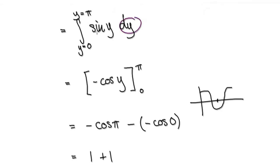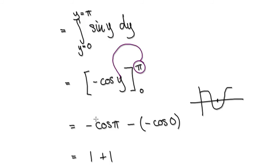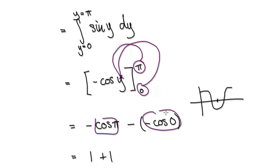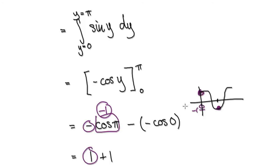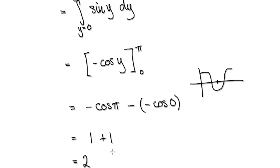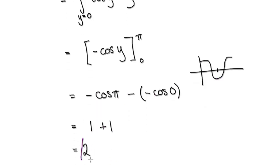Now integrate sin(y) with respect to y, which gives −cos(y). Evaluate from 0 to π: cos(π) = −1, so we get −(−1) = +1, and cos(0) = 1, so we get −(+1) = −1. Wait — that gives −cos(π) − (−cos(0)) = 1 + 1 = 2. The overall answer is 2.